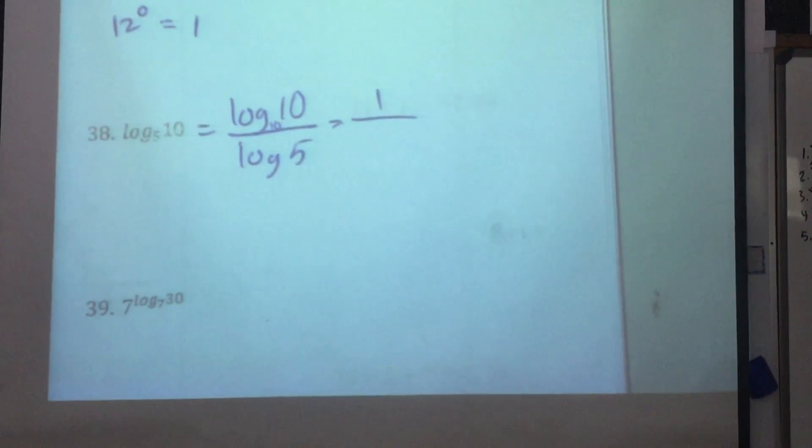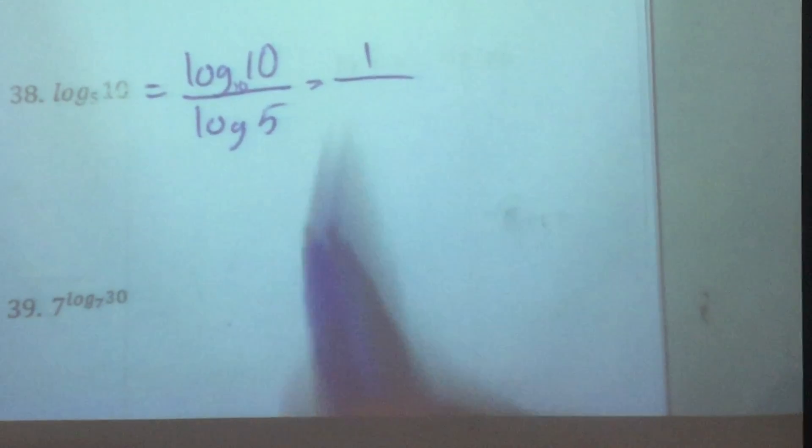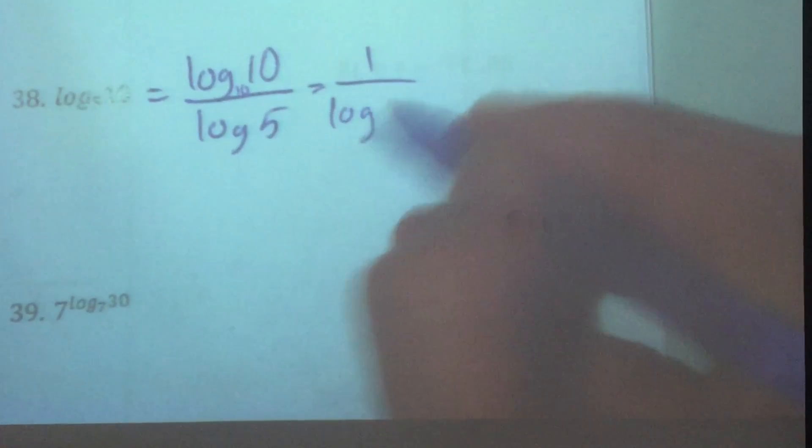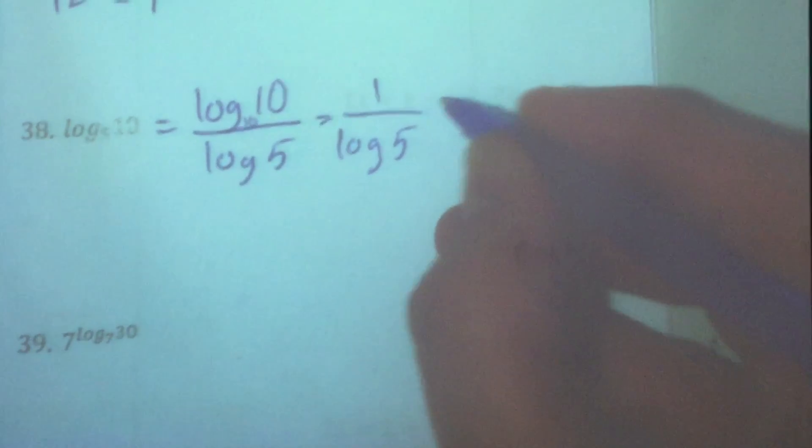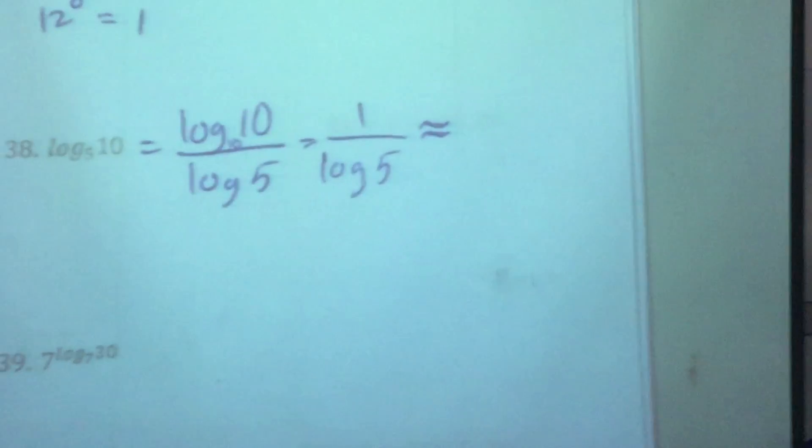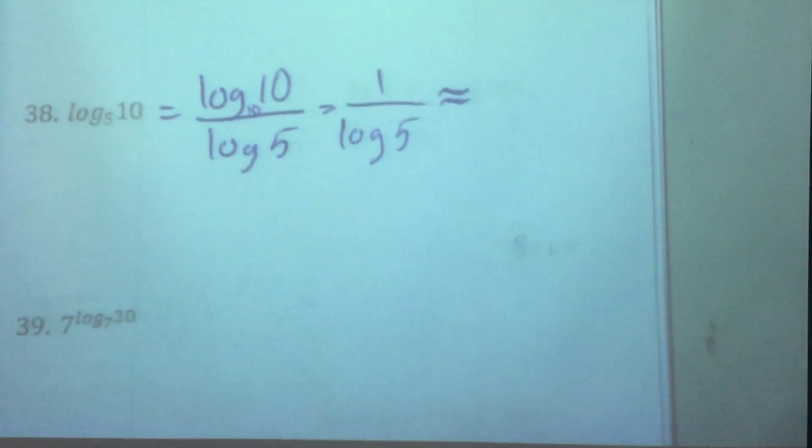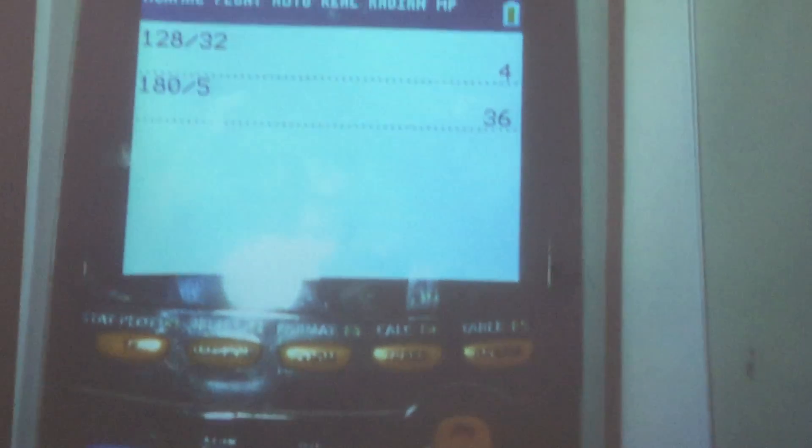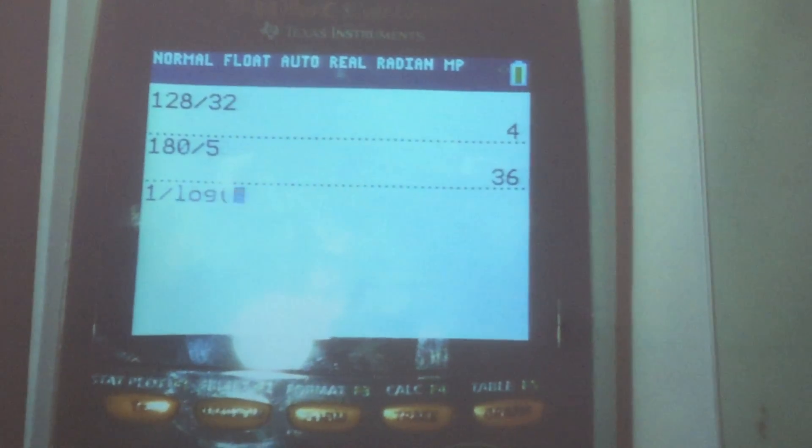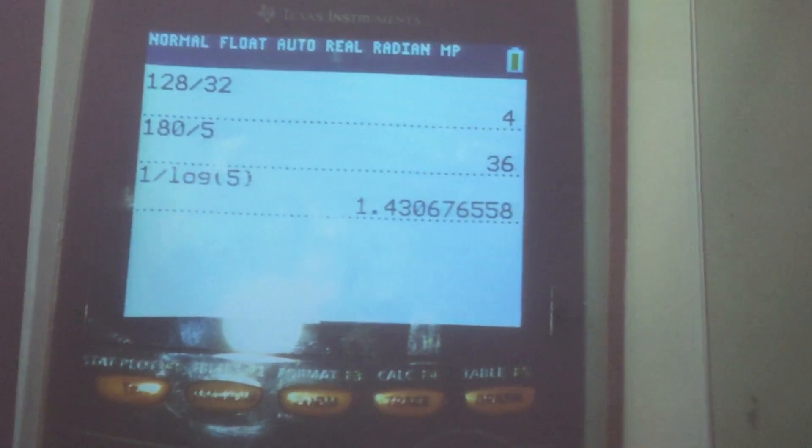Because again, if you don't write the base, the base is 10, right? So log base 10 of 10 is just 1 over log of 5. And that's as simple as we can get it, but we can also do the approximate solution by punching it into the calculator. 1 divided by log of 5. My calculator says 1 divided by log of 5 is just 1.43.